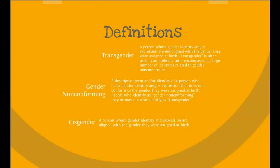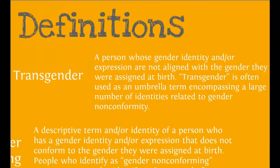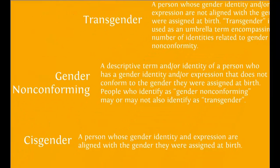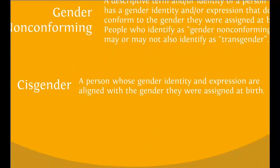Welcome back. Willow uses several terms to describe gender identity and expression, and how that might change over time. For the purposes of this webinar, we're going to use these definitions. Transgender is defined as a person whose gender identity or expression are not aligned with the gender that they were assigned at birth. Transgender is often used as an umbrella term, encompassing a large number of identities related to gender nonconformity. Gender nonconforming can be a descriptive term or an identity of a person who has a gender identity or expression that doesn't conform to the gender they were assigned at birth. People who identify as gender nonconforming may or may not also identify as transgender. And cisgender refers to a person whose gender identity and expression are aligned with the gender they were assigned at birth.